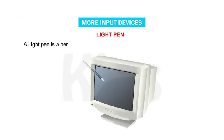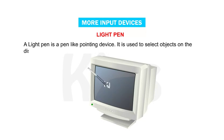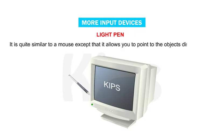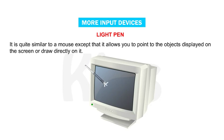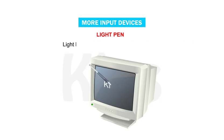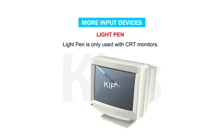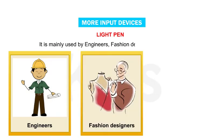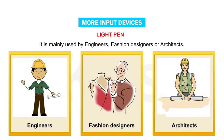A light pen is a pen-like pointing device. It is used to select objects on the display screen. It is quite similar to a mouse, except that it allows you to point to objects displayed on the screen or draw directly on it. Light pen is only used with CRT monitors. It is mainly used by engineers, fashion designers or architects.